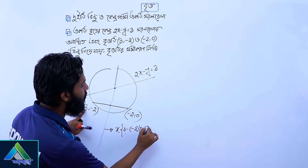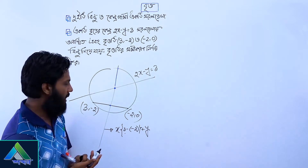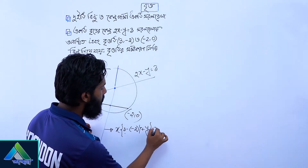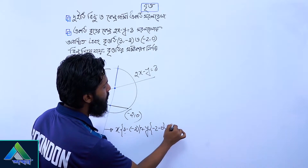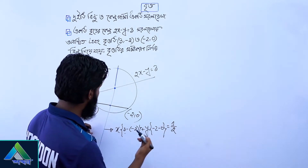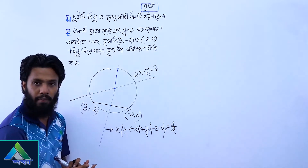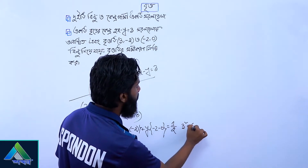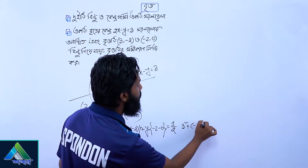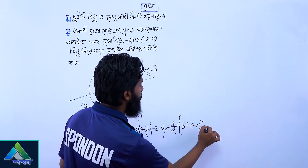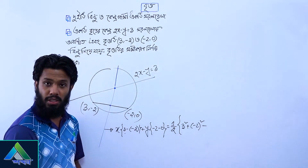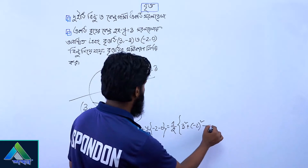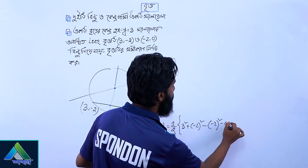To plus y into b minus d. That is b minus d. What do you have? Negative 2 minus 0. Equal to half a square plus c square, 3a square plus negative 2a square minus b. b square minus d square, minus minus 2a square minus 0a square.